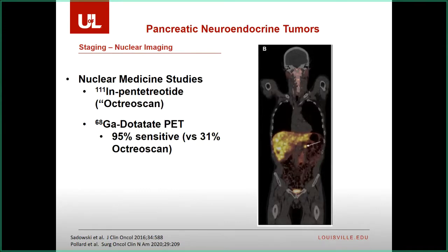For nuclear medicine, the old octreoscan is really no longer used — it was a three-day study, nobody liked it, and it wasn't very sensitive. Now we have the dotatate PET scan. It functions similarly to a regular FDG PET scan but is gallium-linked to dotatate, targeting octreotide-type receptors. It has 95% sensitivity for detecting neuroendocrine metastases versus only 31% for octreoscan. Visually it looks just like a PET scan, so we don't have to change how we think about it.